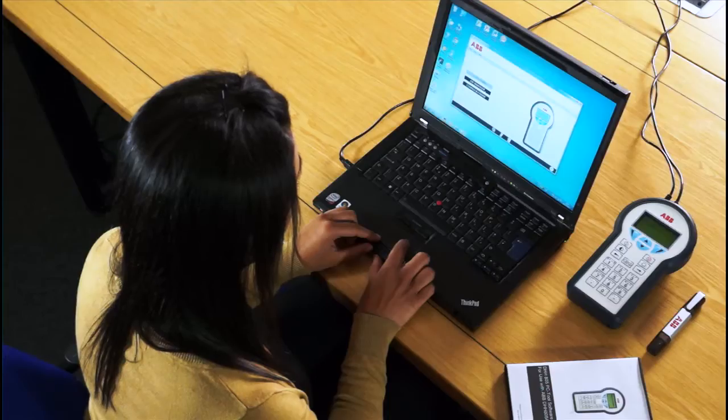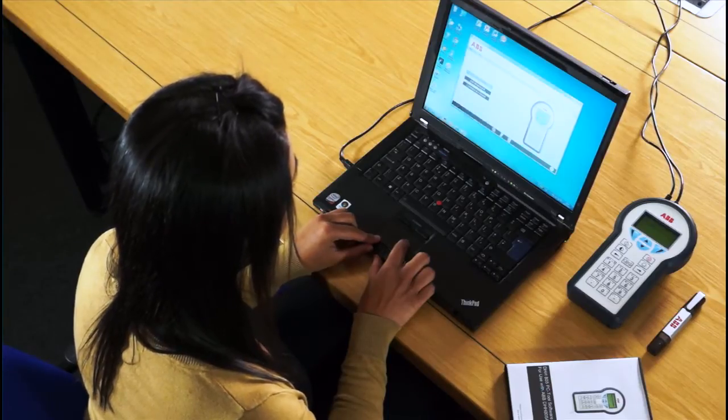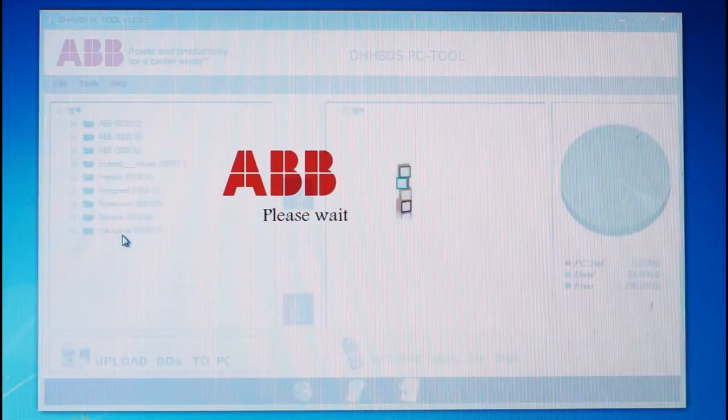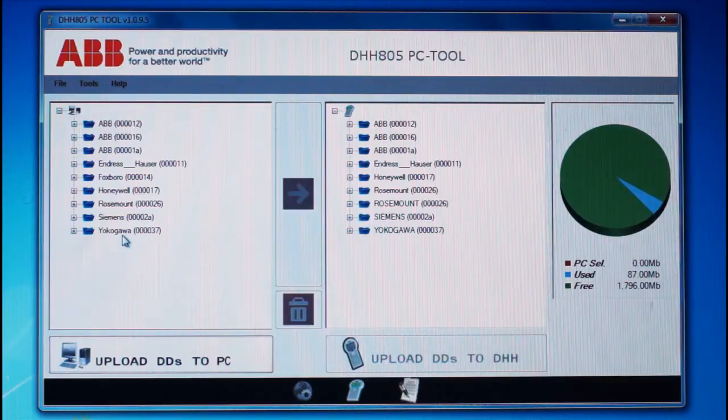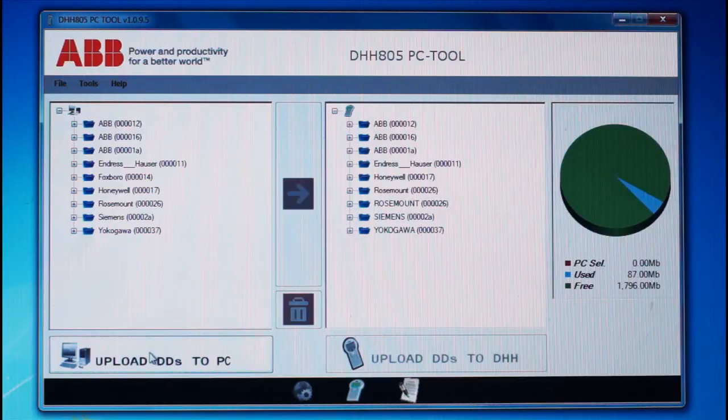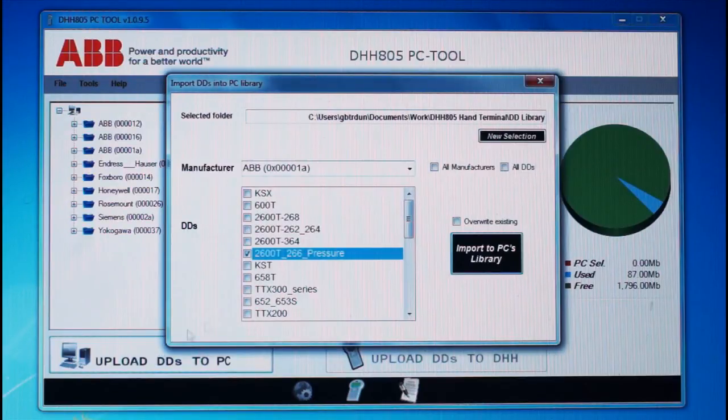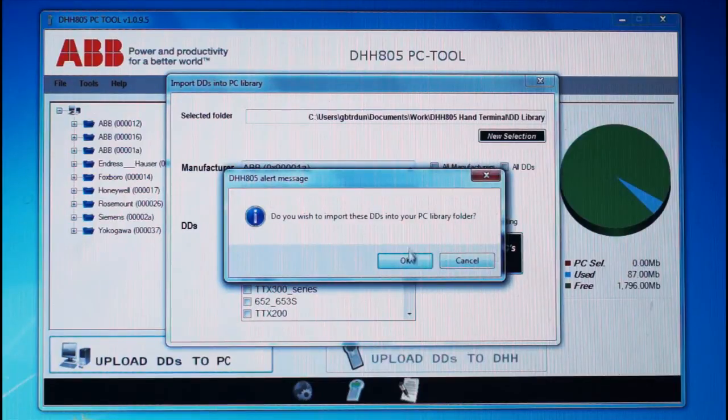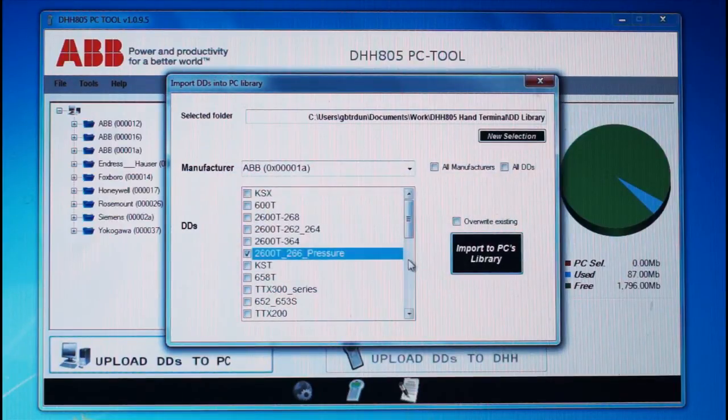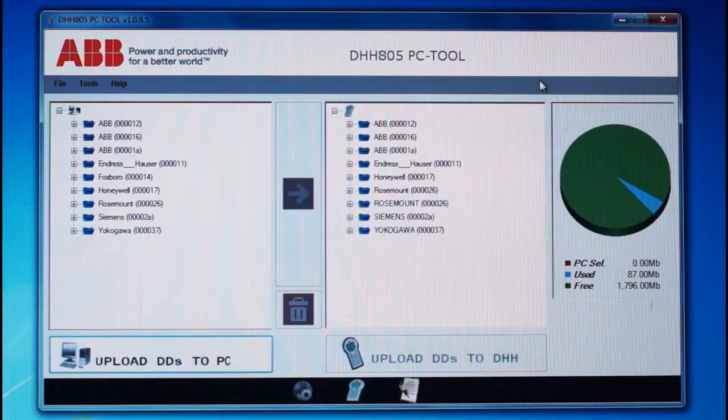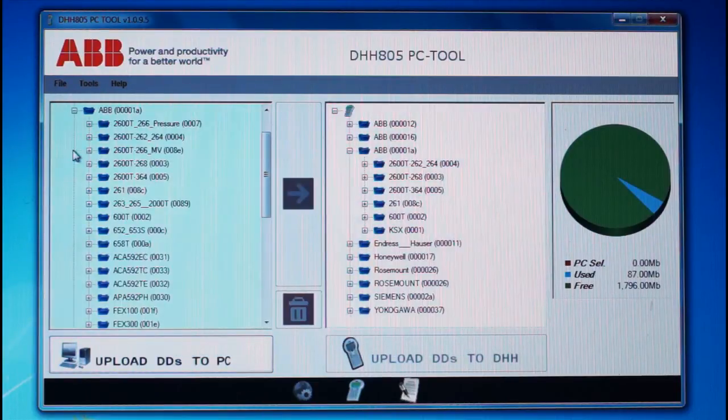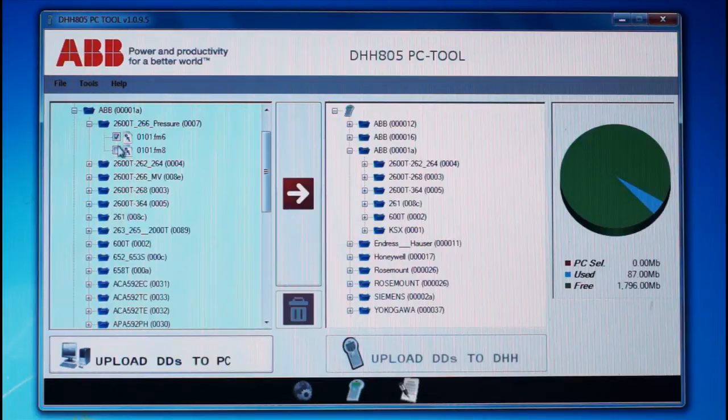After activating the device, you can then start to upload the HART device description you need. If there's a device description that you need that isn't on the DVD, don't panic. Download it from the HART Foundation website free of charge and upload it to your DHH805 using the PCTool software. It really is that easy.